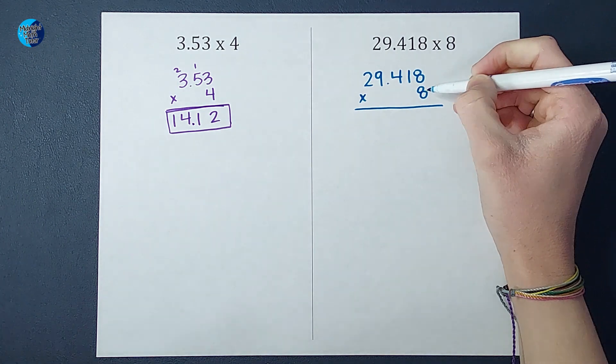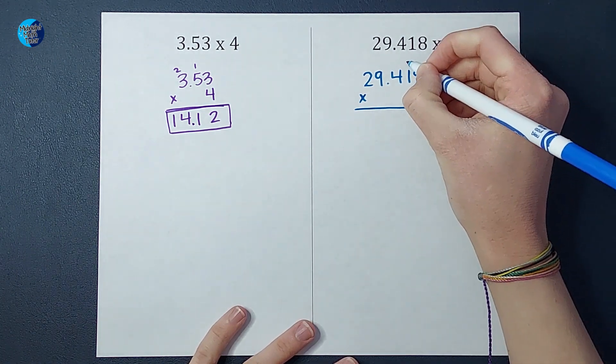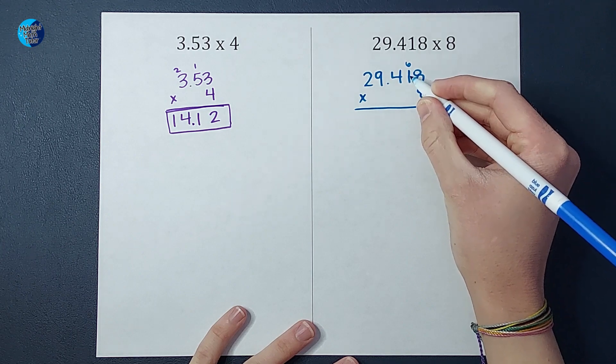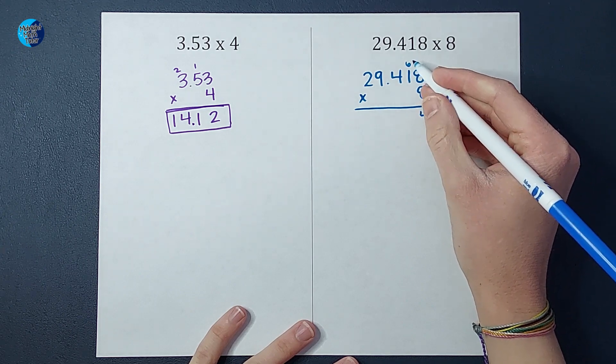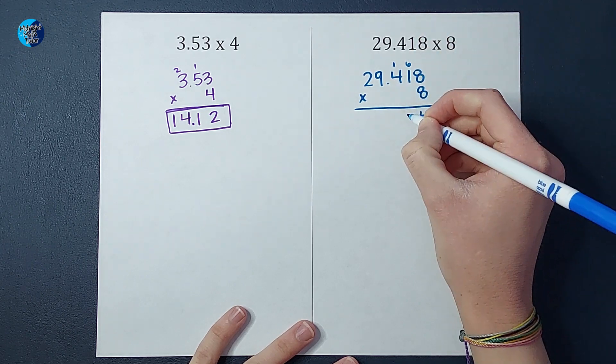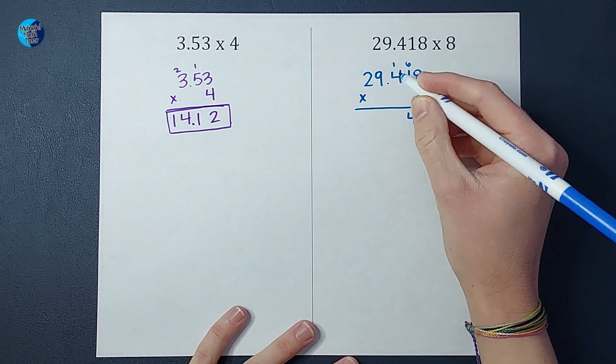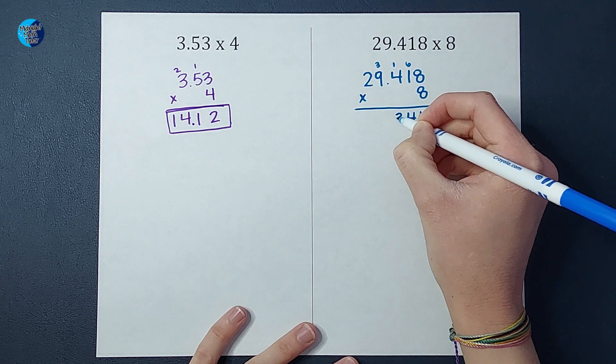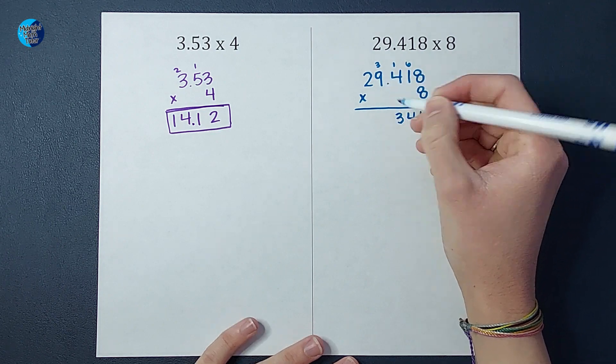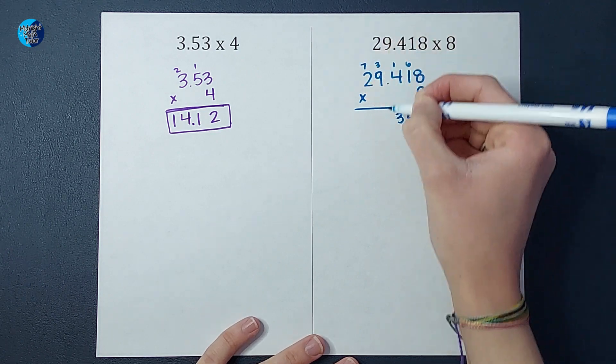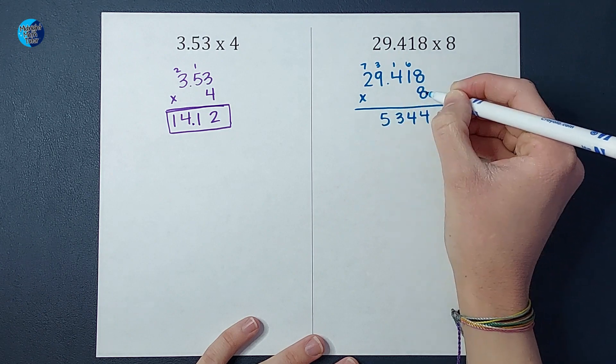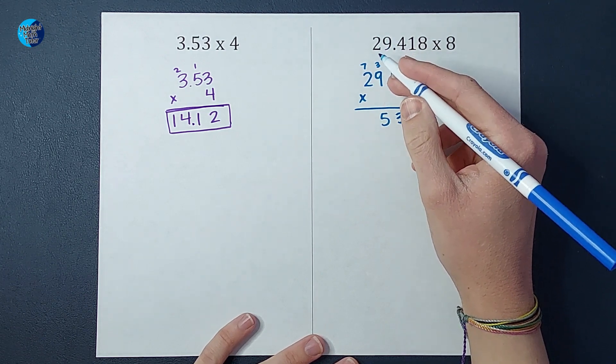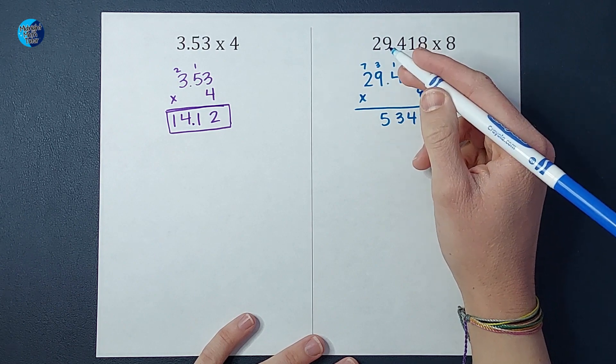Okay, so when I multiply these, I have 8 times 8 which gives me 64. 8 times 1 which is 8 plus 6 which gives me 14. 8 times 4 which is 32 plus 1 gives me 33. 8 times 9 which is 72 plus 3 gives me 75. And 8 times 2 which is 16 plus 7 which gives me 23.